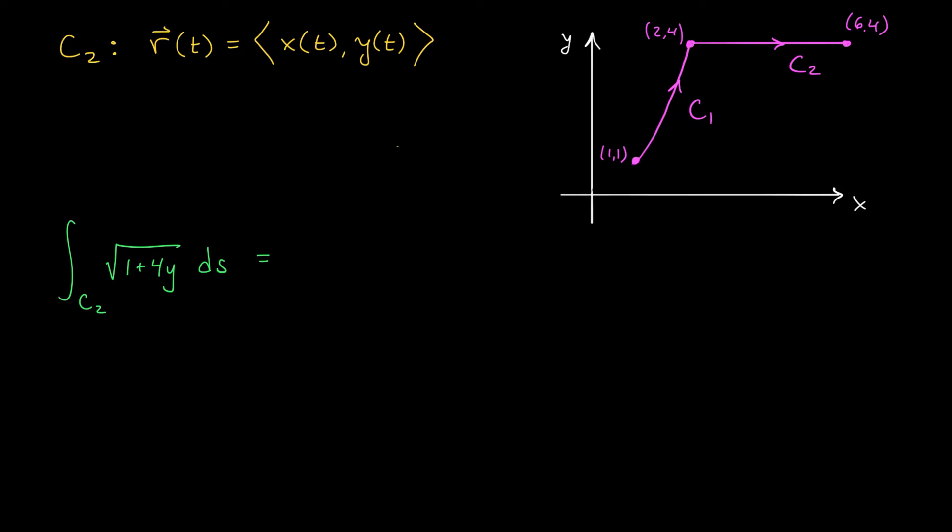Next up is the line integral along C2, the straight line segment from (2,4) to (6,4). Well, when parametrizing straight line segments, there's a little trick. You can always parametrize them as t times the terminal point, in this case (6,4), plus 1 minus t times the initial point, in this case (2,4). This is going to simplify to (2 plus 4t, 4).